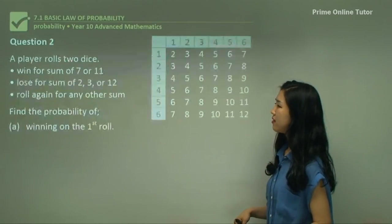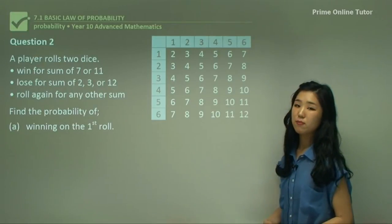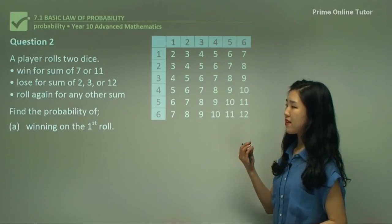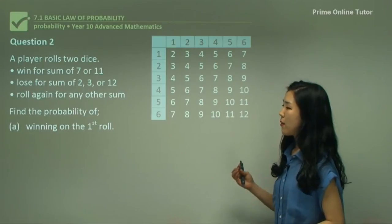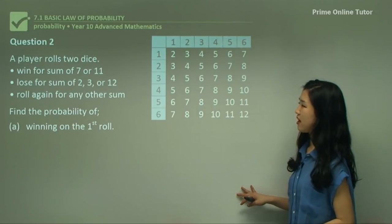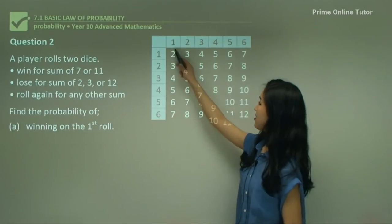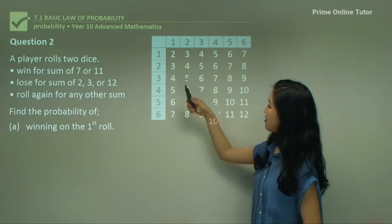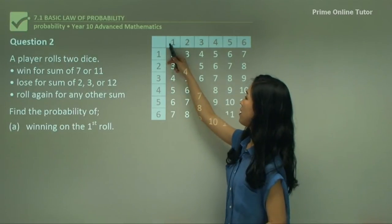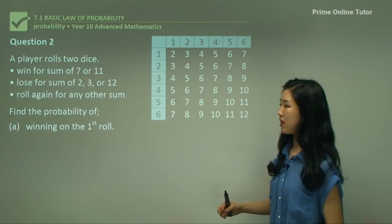So let's move on to question two. A player rolls two dice — win for a sum of 7 or 11, lose for a sum of 2, 3, or 12, and roll again for any other sum. So this is our table here and you can actually draw this yourself. Because we are playing with two dice, this is the first die up to 1 to 6, and the second die 1 to 6. These are all the different possibilities and outcomes we could have. We're focusing on the sum because this whole winning and losing game depends on the sum.